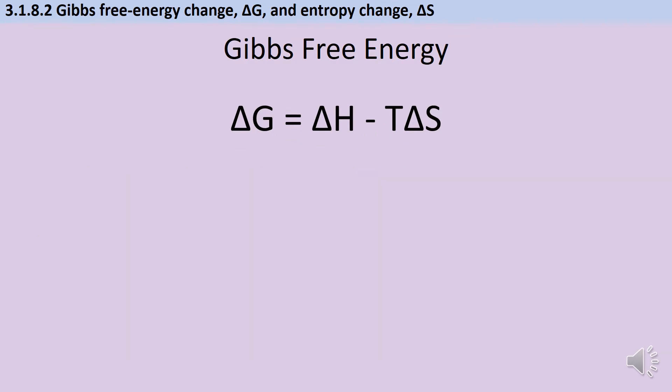In practice this means that there are two different things that could lead to a reaction being feasible. ΔG must be negative so either ΔH must be negative or ΔS must be positive so that when you take it away you still get a negative number. So what this means in practice is that reactions are more likely to be feasible if they're exothermic or if they reduce order, which is what entropy is all to do with.